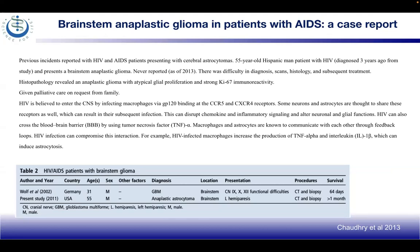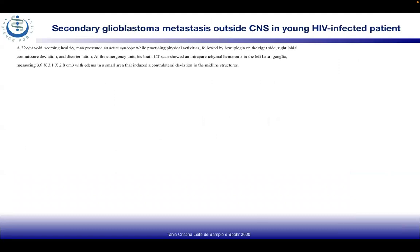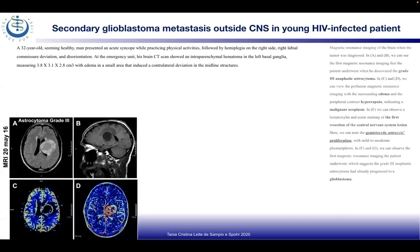HIV can cross the blood-brain barrier by using TNF-alpha. Macrophages and astrocytes are known to communicate through feedback and feed-forward loops, and HIV infection can compromise this interaction. For example, HIV-infected macrophages increase production of TNF-alpha and interleukin-1 beta, which can induce astrocytosis. Now looking at a secondary glioblastoma metastasis case in a young HIV-infected patient: a 32-year-old man with acute syncope during physical activity had hemiplegia on the right side, right labial commissure deviation, and disorientation.